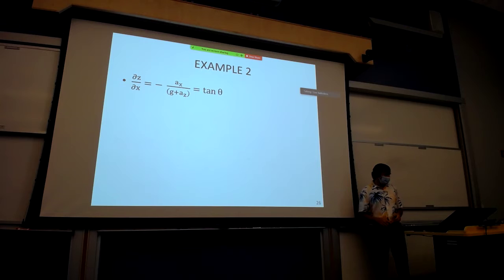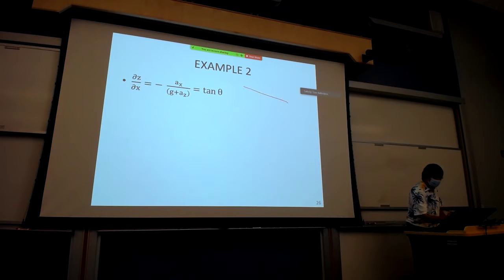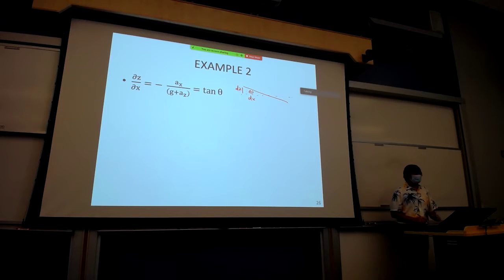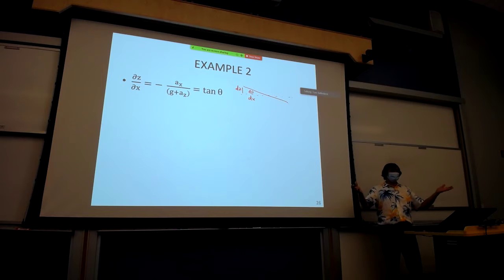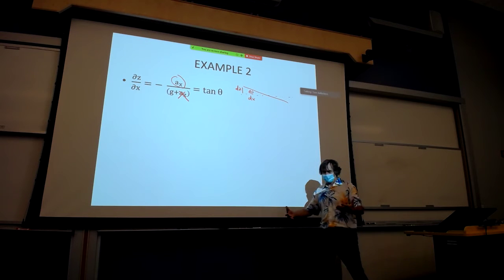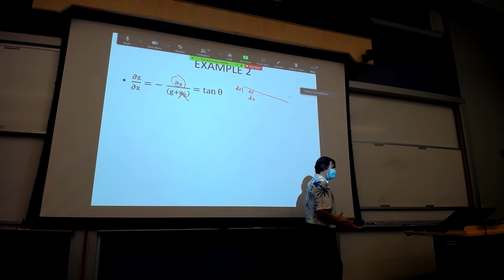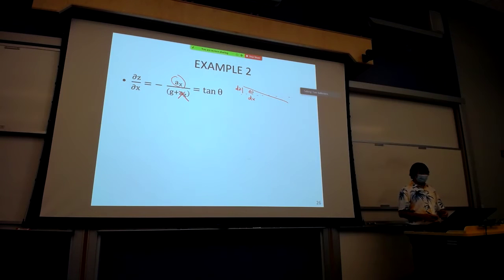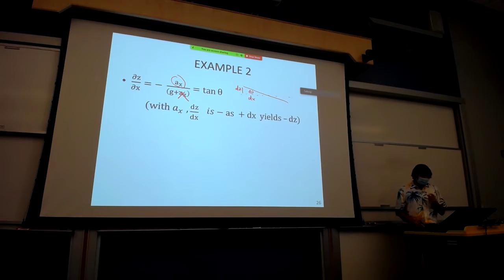We employ the slope equation. If this is theta, then dz is over dx, and we know theta is ten degrees. It's actually minus ten degrees because we have AX in the positive x direction. There is no AZ. We're solving: what is the horizontal acceleration necessary to create this condition? We know theta, so tan(theta) equals dz/dx, and there's only one unknown: AX.